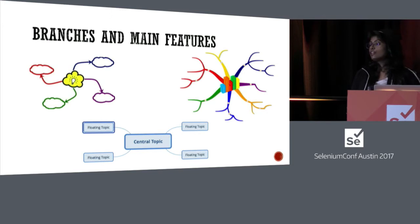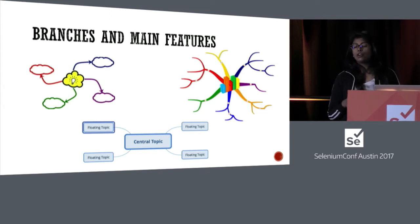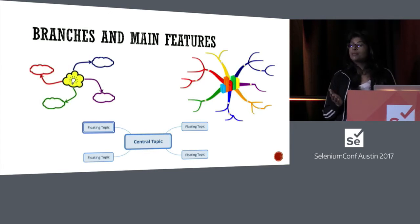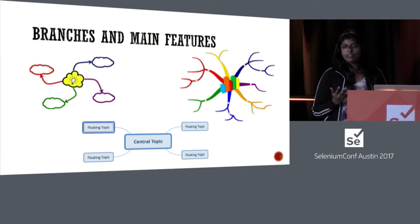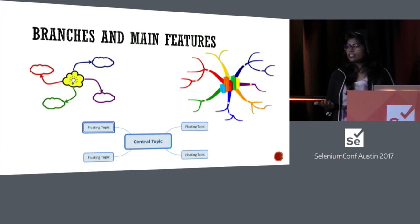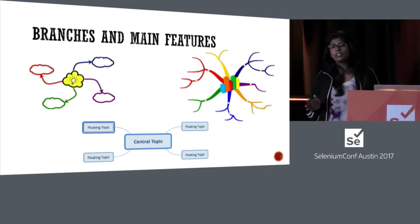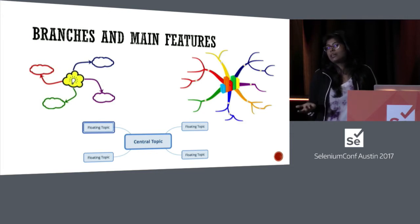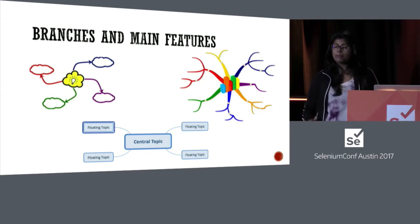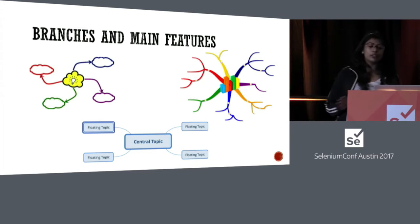Once you've identified your core functionality, create branches out of it. It's advisable not to go beyond five to six branches — these branches signify the main features of your functionality: what purpose does it serve, what actions are to be performed. If you go beyond five or six, the tree will spread and become something you don't want to manage or execute. Keeping it simple and modular will definitely help you out.